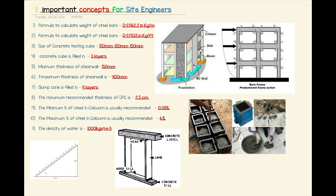At number two, the formula to calculate the weight of steel bars in kilograms per feet is d² divided by 533. So those are the two formulas we have to calculate the weight of steel bars.